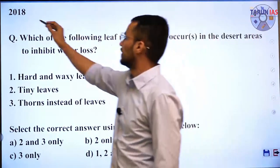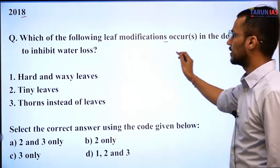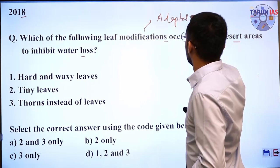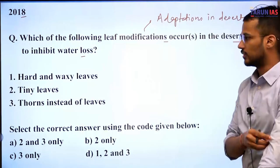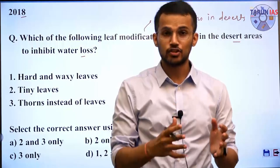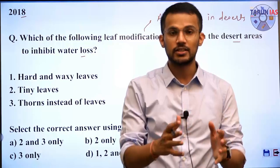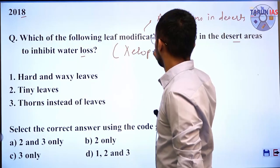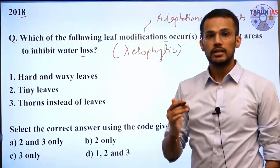The next question from 2018 asks: which of the following leaf modifications occur in desert areas to inhibit water loss? The question is about adaptations in desert areas where water is scarce. Plants exhibiting adaptations to live in dry conditions are known as xerophytic plants. The options given are: hard and waxy leaves, tiny leaves, and thorns instead of leaves.